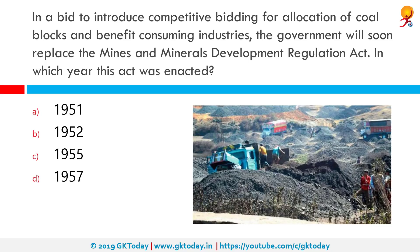In a bid to introduce competitive bidding for allocation of coal blocks and benefit consuming industries, the government will soon replace the Mines and Minerals Development Regulation Act. In which year was this act enacted? The Mines and Minerals Regulation and Development Act 1957 is an act of the Parliament of India. It was enacted in 1957 to regulate the mining sector in India. It was amended in 2015 and 2016.